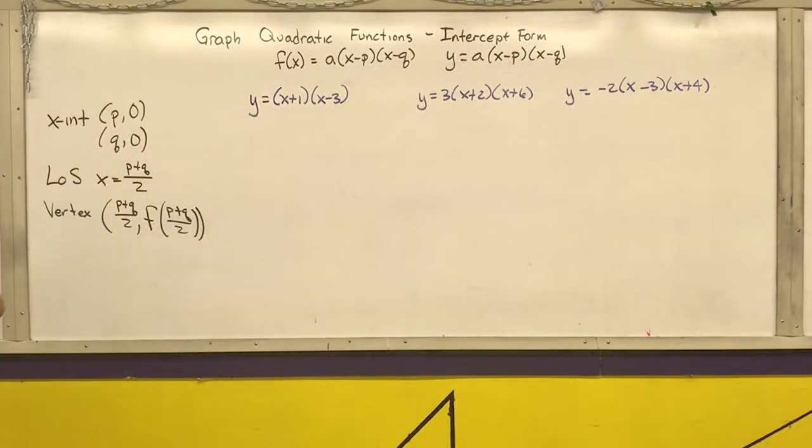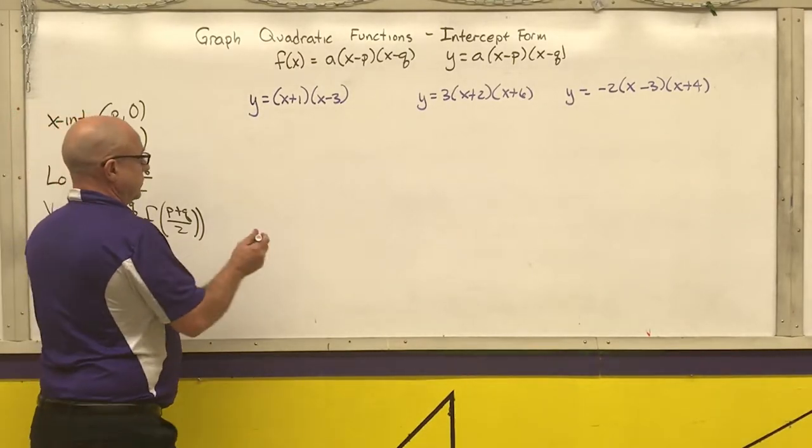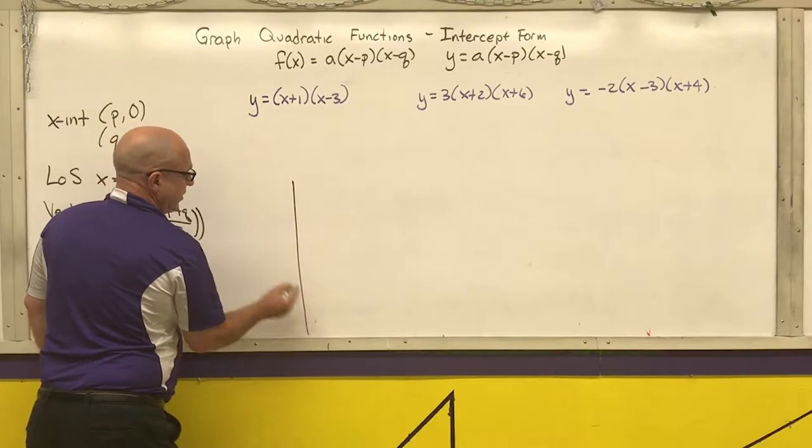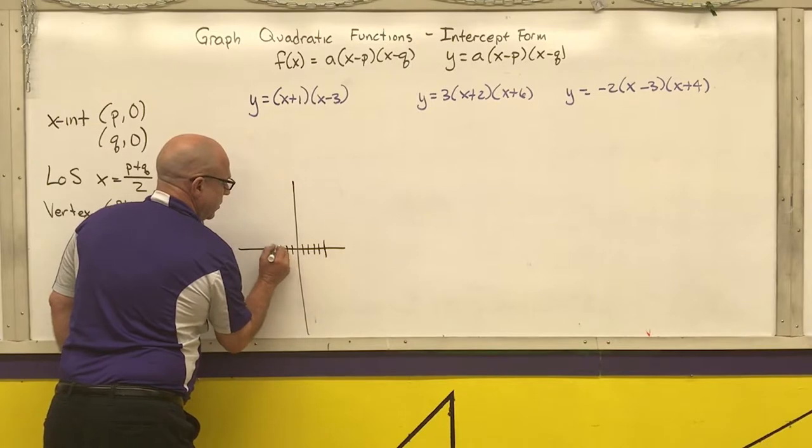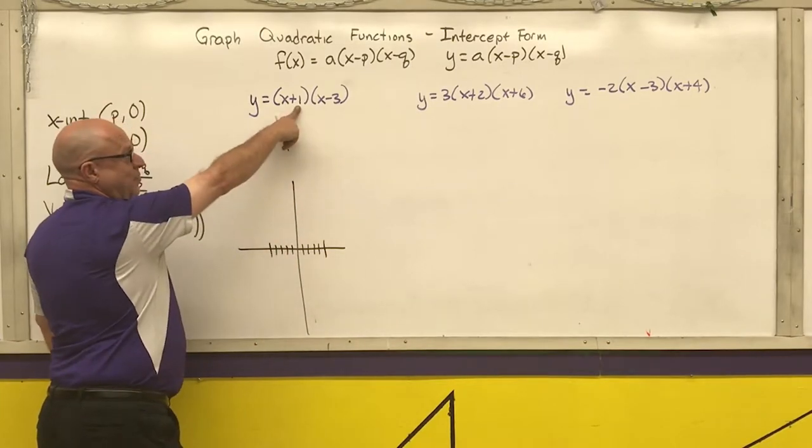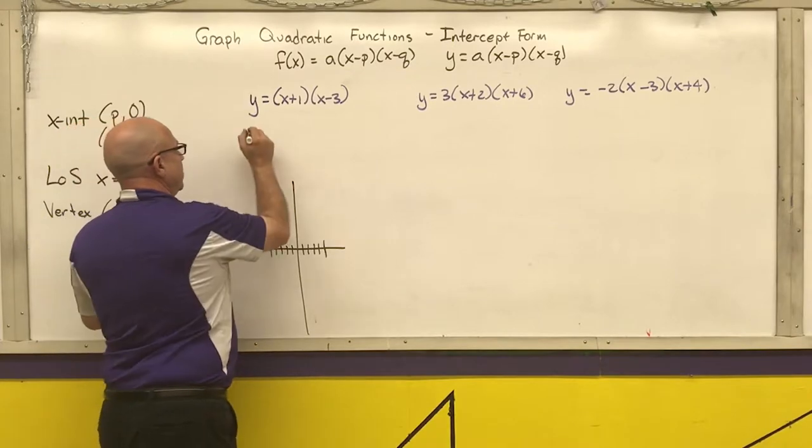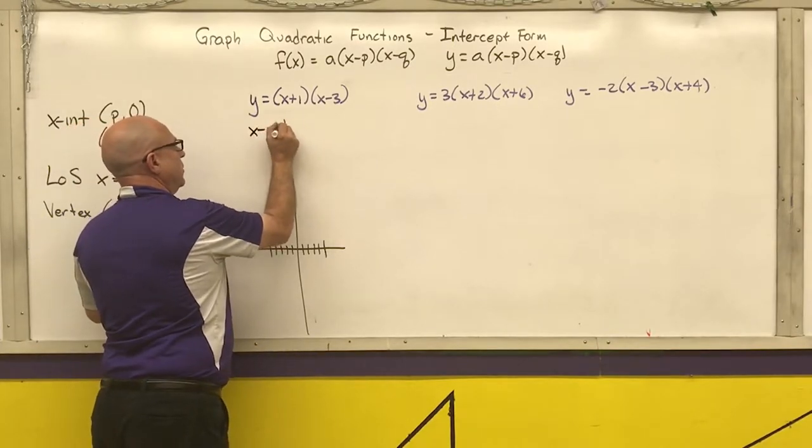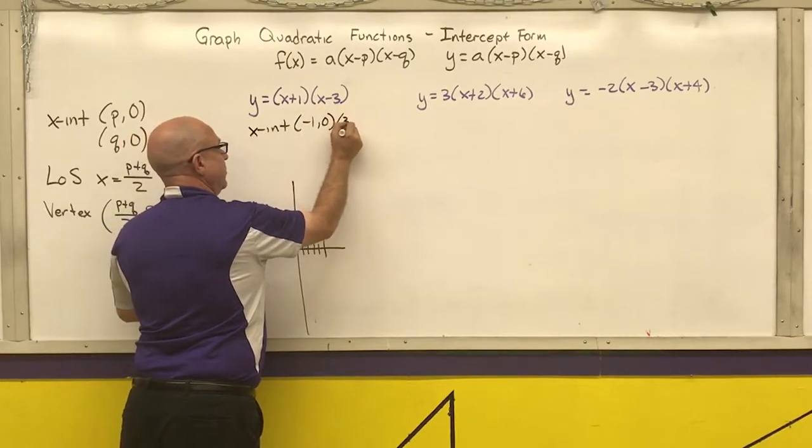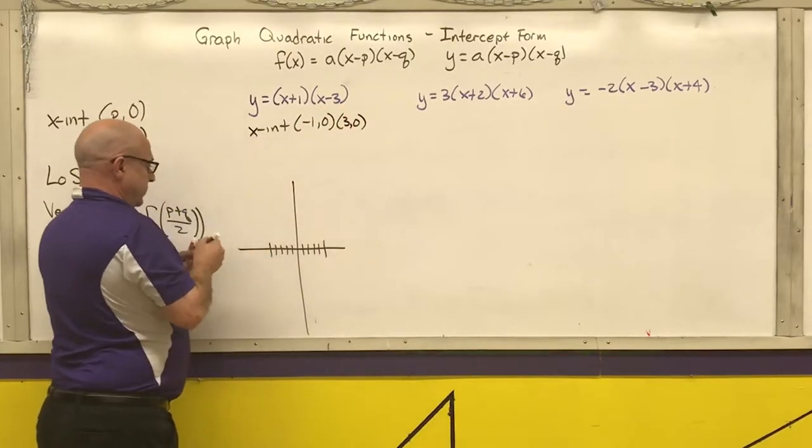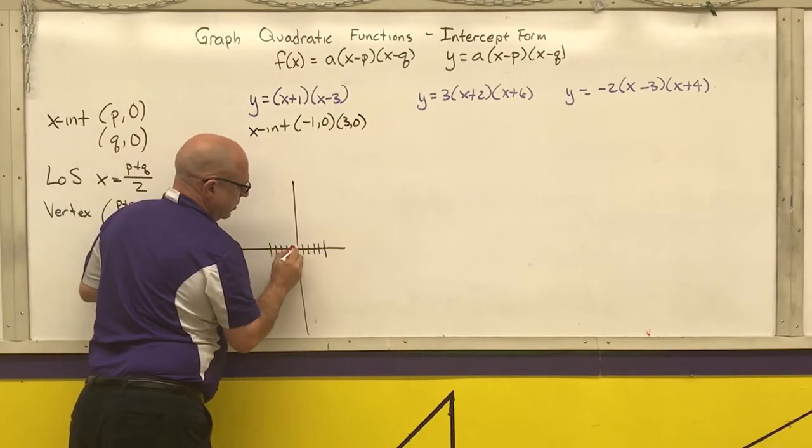So first thing I want to do is I want to identify my x-intercepts. Your x-intercepts are the opposite of that number, which would be negative 1. So x-intercepts are at negative 1 comma 0 and 3 comma 0.